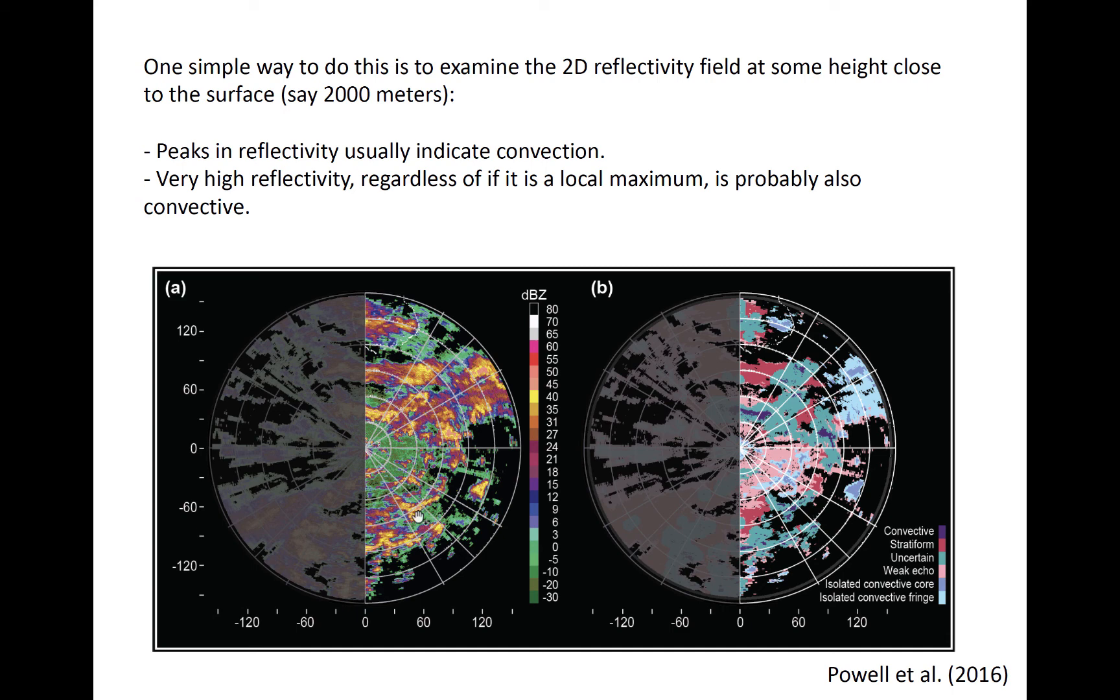While weaker reflectivity, like in this area right here, that varies more smoothly in space, is more likely to be stratiform.